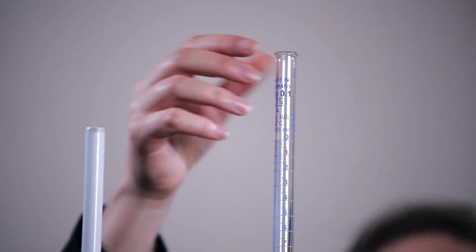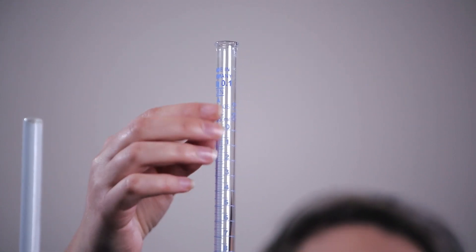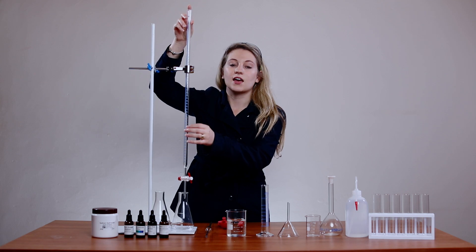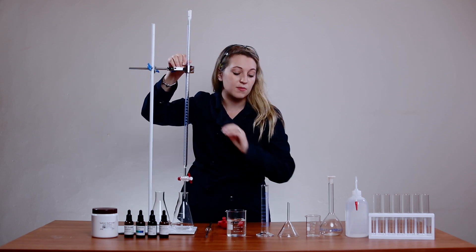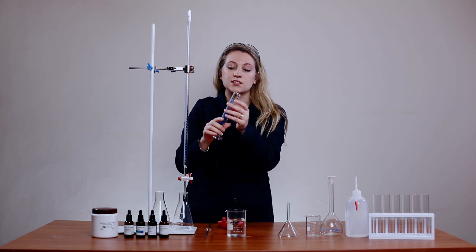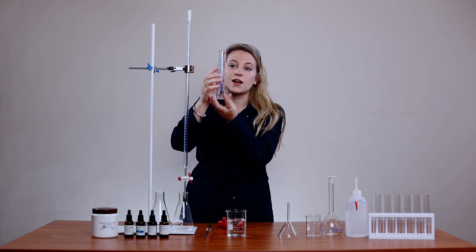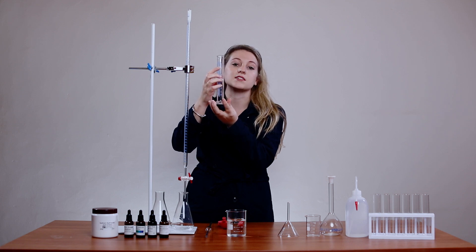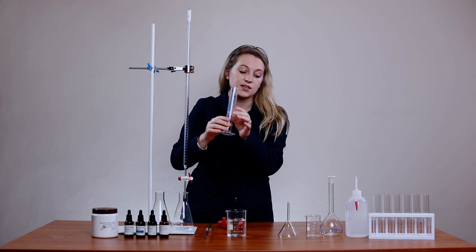On your burette you can see that on top here it says 0.05 milliliters plus minus, which means that your burette has an accuracy of two decimal places. If you compare that to a measuring cylinder which only has an accuracy of plus 0.5 milliliters, you can see the accuracy is only to one decimal place.